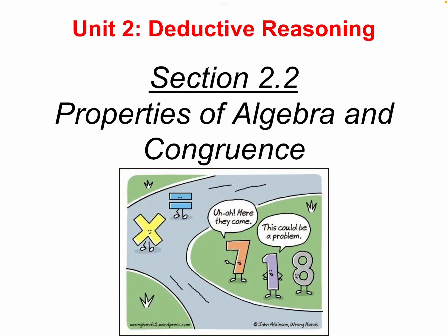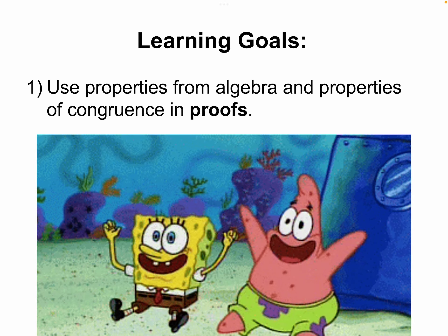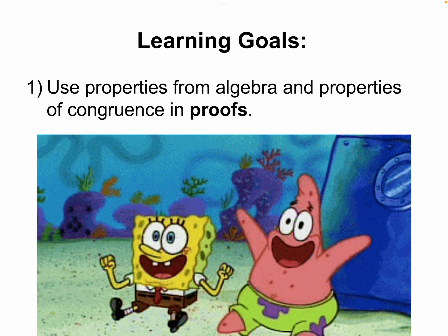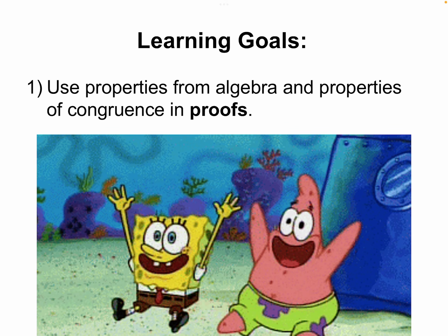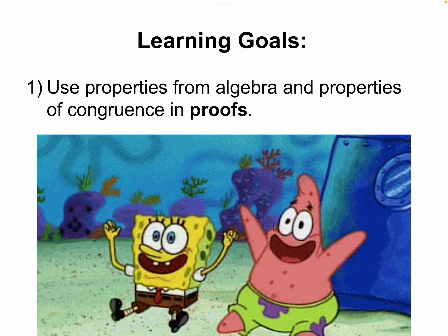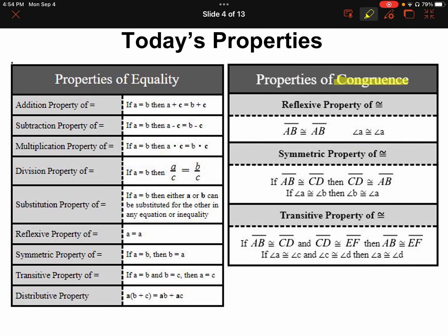Lesson 2.2 is going to deal with the properties of algebra and congruence. It's my hope that you took notes on this over the weekend. Today what we're going to be doing is using properties from algebra and properties from congruence in proofs. For today's properties, we're going to be working with two different types: properties of congruence and properties of equality.